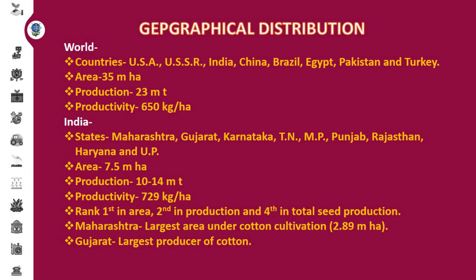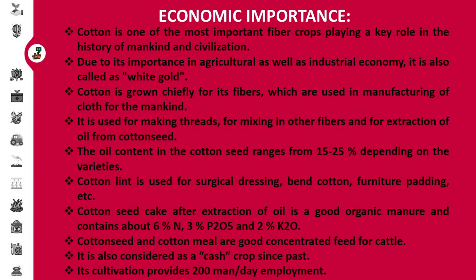7.5 million hectare area is under cultivation of cotton in India, producing 10 to 14 million tons. The average productivity of cotton in India is 729 kg per hectare. India ranks first in case of area, second in case of production, and fourth in case of total fiber production. Maharashtra has the largest area under cotton cultivation at 2.89 million hectare, and Gujarat is the largest producer of cotton in India.